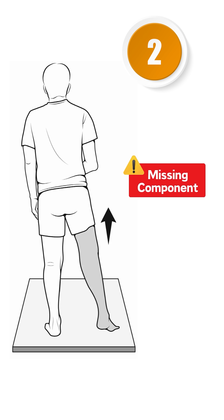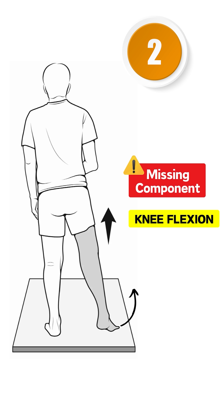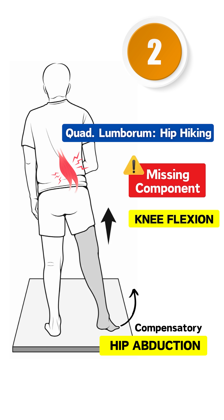The second reason is the missing component, which is knee flexion. Knee flexion is absent, and to clear the leg from the ground, hip hiking is performed by the quadratus lumborum muscle as a compensatory mechanism.